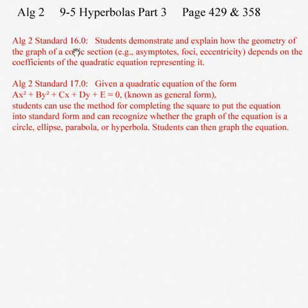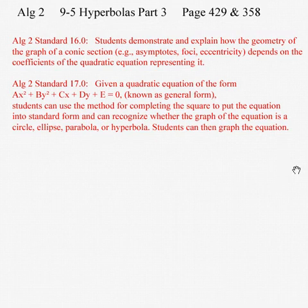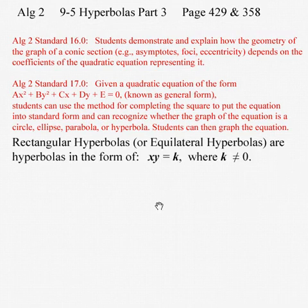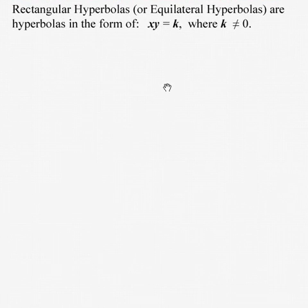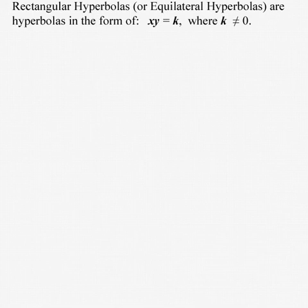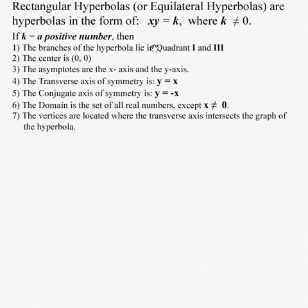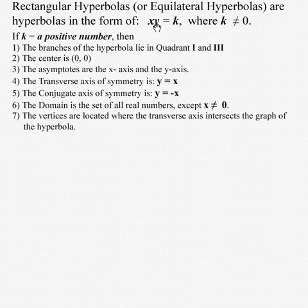We're finishing up state standards 16 and 17 as we complete chapter 9, section 5, and we're doing a third part, which are hyperbolas still, but remember they're the rectangular hyperbolas. So here's a quick review of what we've learned so far. Rectangular hyperbolas are in the form x times y equals k, where k cannot equal zero. If we solve for y, y would equal k divided by x, and that was the equation of inverse variation.